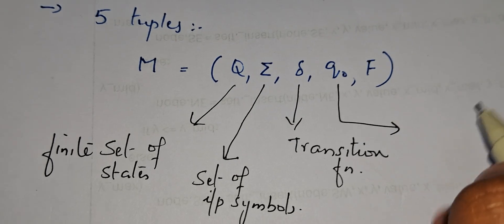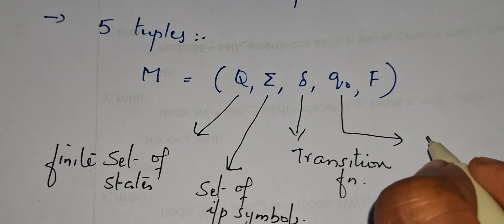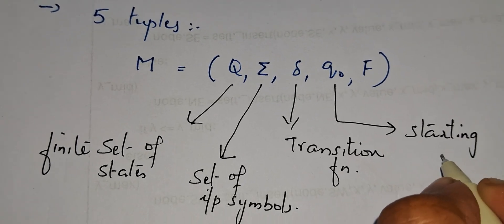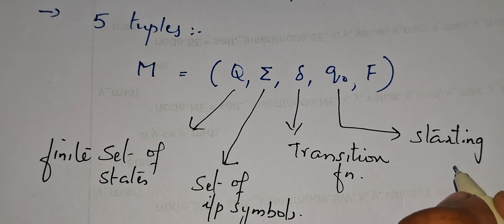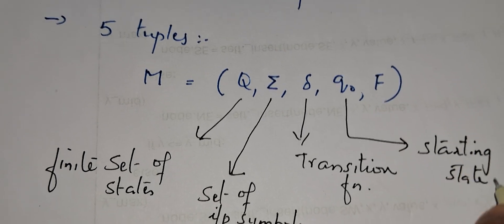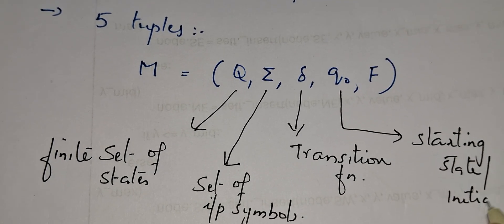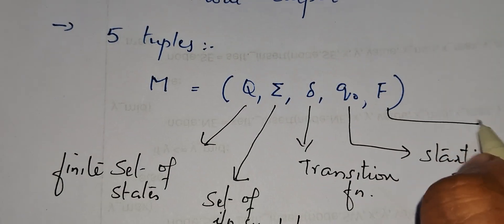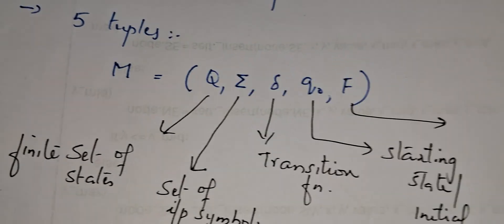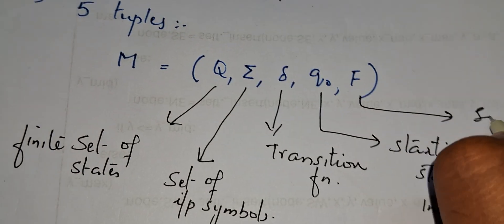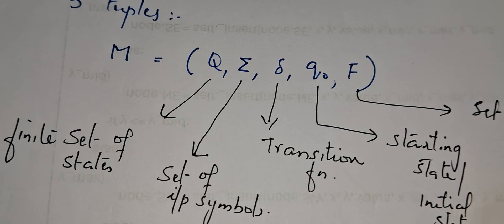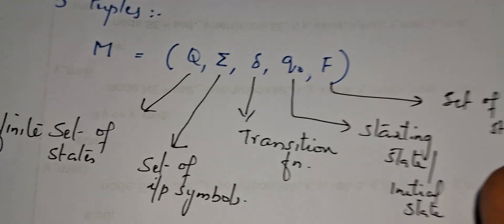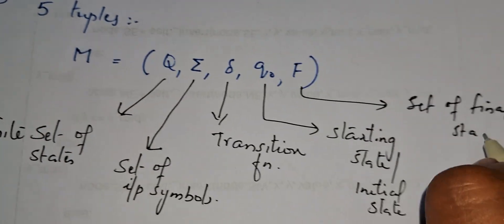Then what is Q0? Q0 is the starting state or initial state of the automata. There will be only one starting state. Then what is F? F is the set of final states — not only one final state, it is a set of final states.